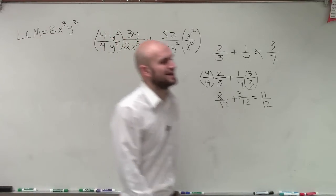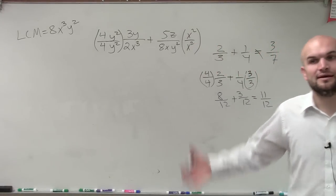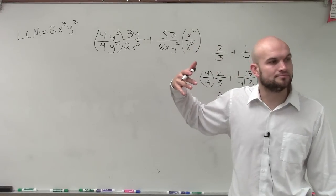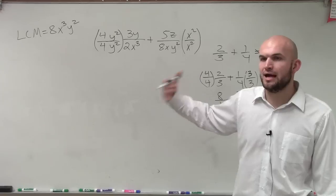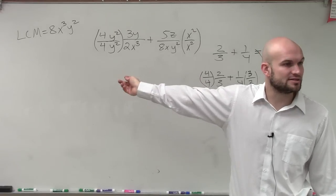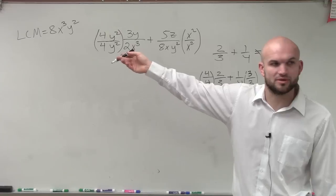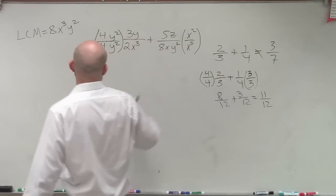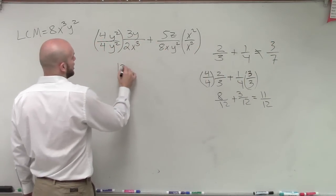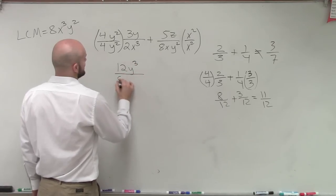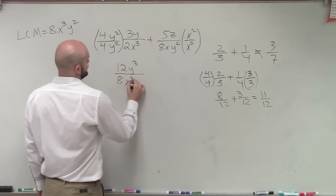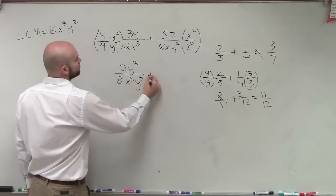Now, the reason I write out the LCM to the side is because now when I complete my multiplication, I want to make sure that the denominators are equal to my LCM, because if it doesn't equal, I did something wrong. So now, let's multiply across.